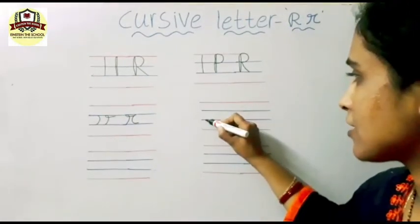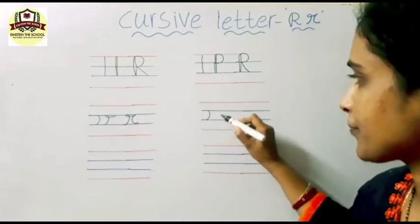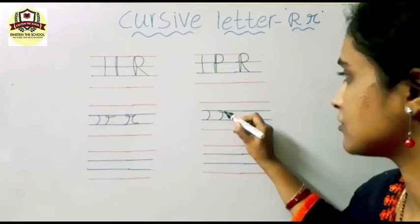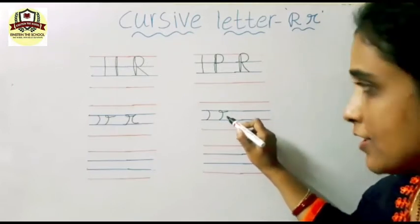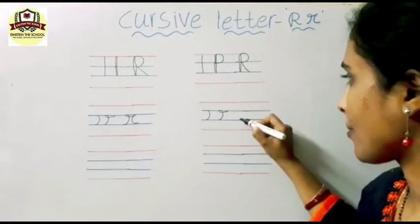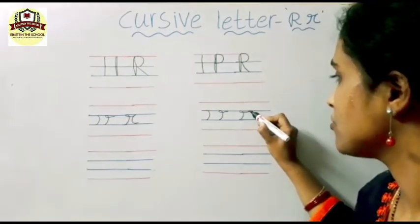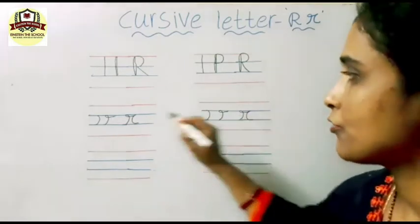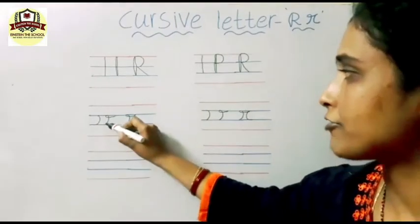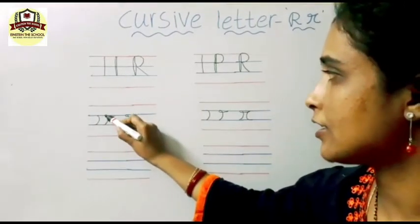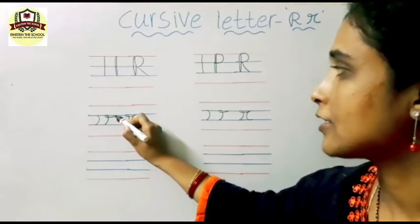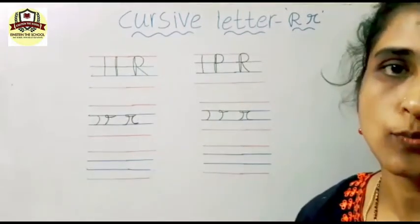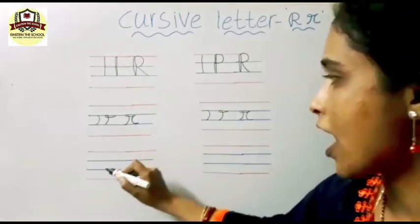First write reverse C, starting from the third line. Now after this turn, write the sleeping line. Now write the letter C. First write the reverse C, after writing the reverse C turn here, now write the sleeping line. After writing the sleeping line, again write the letter small C. This is the small cursive R.